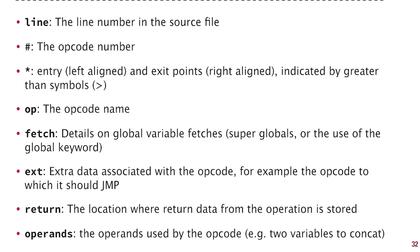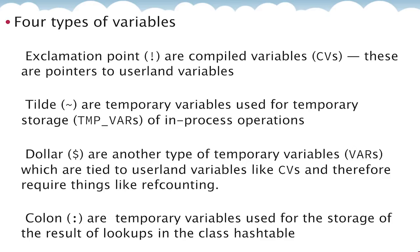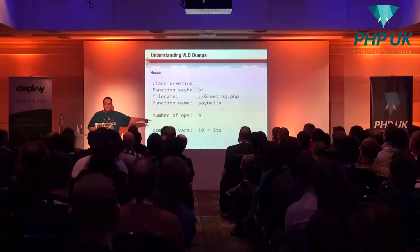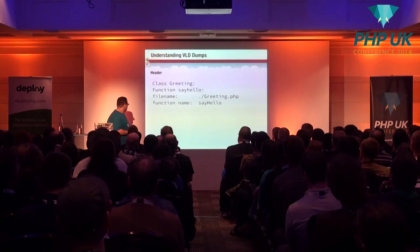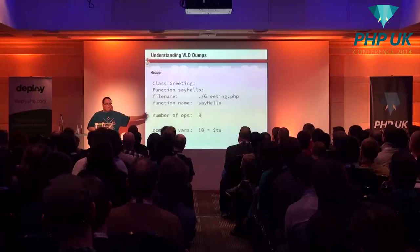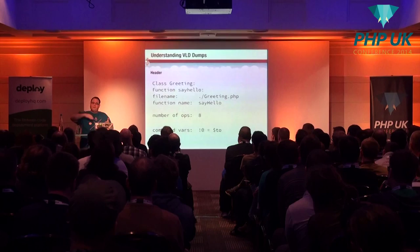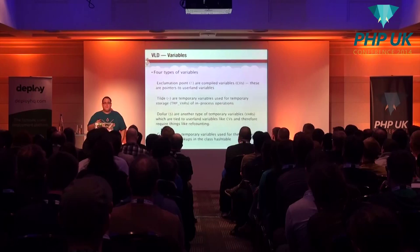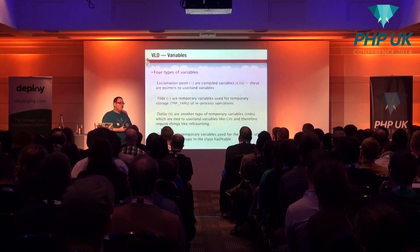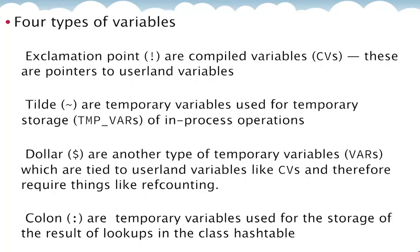There are four types of variables. Exclamation-point-prefixed ones are called compiled variables — they're pointers to userland variables. The compiled variables line in the header tells you that, for example, '!0' maps to '$a' in userland. Tilde-prefixed ones are temporary variables — whenever PHP needs to store something temporarily under the hood. Unless it needs ref counting, in which case it has a dollar prefix. And colon-prefixed ones are used for one thing only: when the engine looks up a class in the hash table, it stores it in colon-prefixed variables. I would like to say there is nothing that will syntax-highlight this stuff, so I did it all by hand.